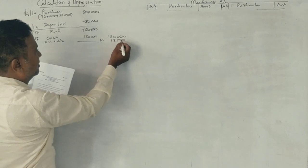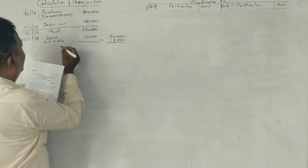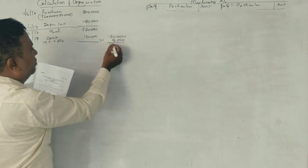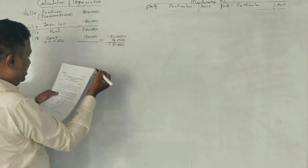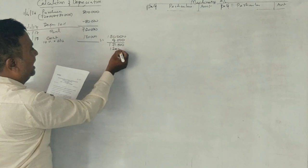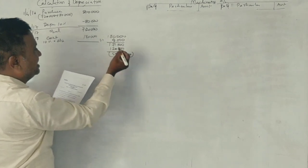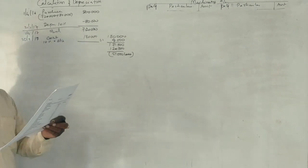So depreciation is $9,000. That is $171,000 written down value. He sold it for $120,000. That is $51,000 loss. You understand?